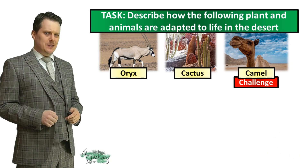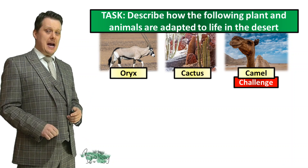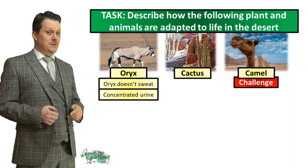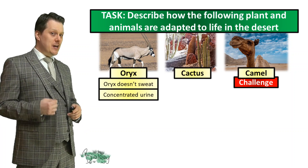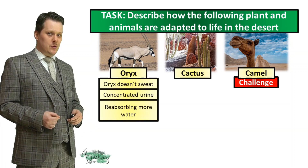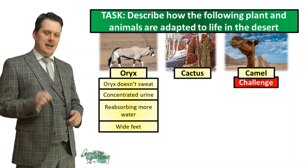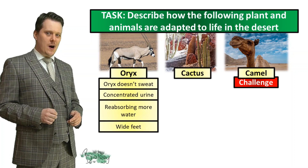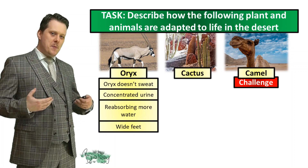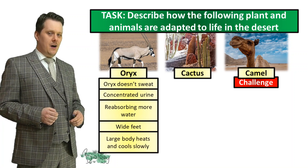Have you got all of your adaptations? Let's start with our oryx. Remember, our oryx doesn't sweat. Our oryx has very concentrated urine, which means it's reabsorbing a lot of that water. Usually it's difficult to walk on sand, but our oryx has very wide feet. And to be able to thermoregulate properly, it has a very large body.